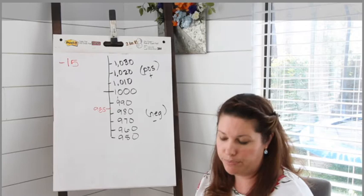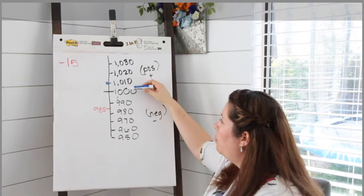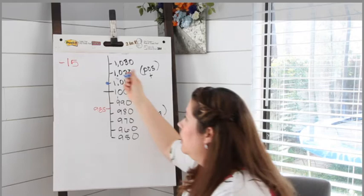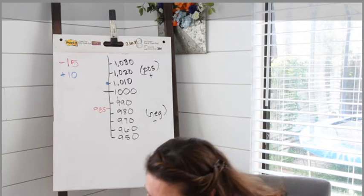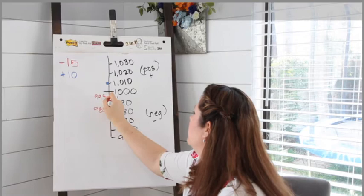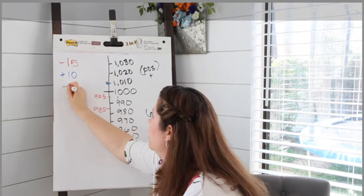For February, it says 1,010. If we look on our number line, 1,010 is in the positive zone. How far is it from our origin — from 1,000? It's 10. So for that one, the answer would be positive 10. The next one says 995. That's not all the way to 990 — it's right here in the middle. It's in our negative zone because it's below 1,000, so our answer will definitely have a negative. How far away is it from 1,000? It's 5, so we put negative 5.